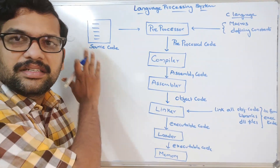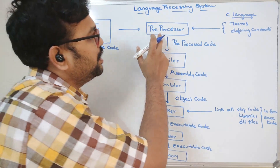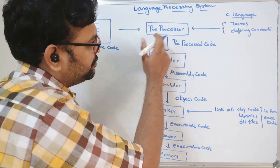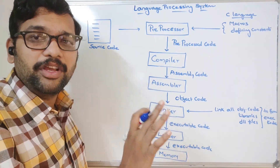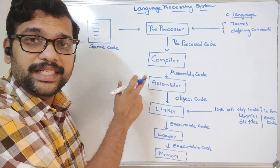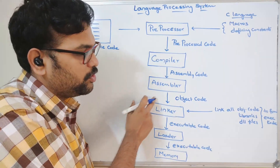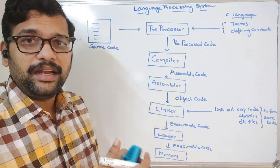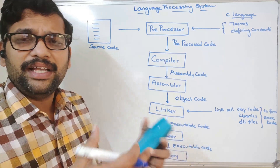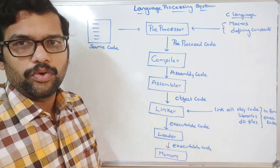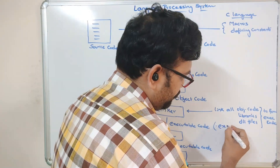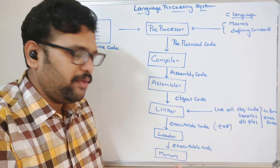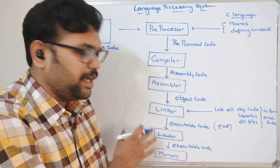To summarize: the source code is nothing but instructions written by the user in a high level language. First, the preprocessor stage executes preprocessor directives. Then it is given to the compiler, which converts it into assembly code. The assembly code is given to the assembler, a language translator, which converts it to machine code or object code. This is given to the linker, where all multiple object files, DLL files, and libraries are linked to form an executable (.exe) file. This executable code is then loaded into memory to get executed, and this process is done by the loader.